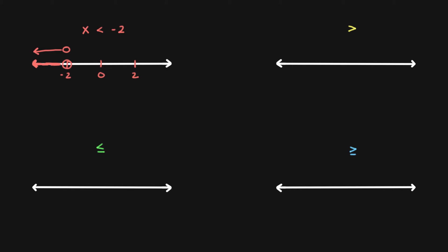If we have something like x is greater than 4, maybe 4 is somewhere right here. We're going to use an open circle like that. Since it's greater than, we have a greater than sign kind of at the end of the number line — you can remember it that way. That will be the number line for x is greater than 4, and it looks something like this.